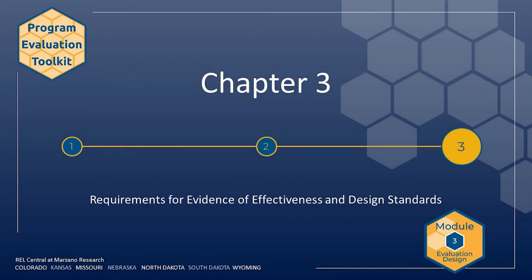Welcome to the third chapter of module 3. In this chapter, you will learn about requirements for evidence of effectiveness and design standards. Specifically, the chapter discusses the requirements for evidence of effectiveness under the US Department of Education's 2016 Non-Regulatory Guidance, Using Evidence to Strengthen Education Investments, available on the resources page of the website, for implementation of the Every Student Succeeds Act, ESSA.